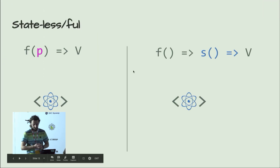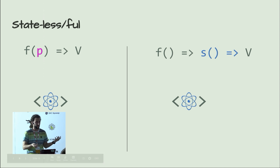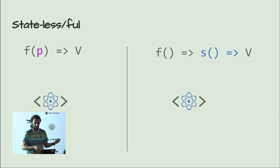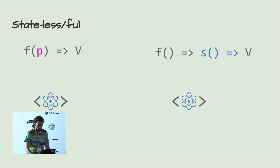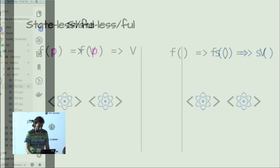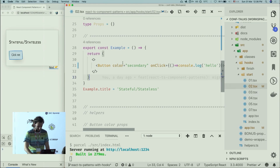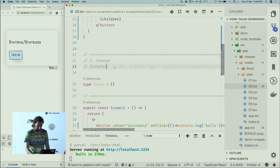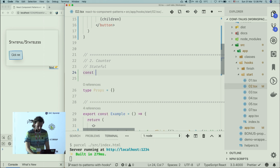The second pattern is the stateful component. A stateful component is just a function that manages some internal state. We handle internal state in React via hooks — it used to be classes, but now we use hooks. Classes are kind of dead in React. Let's implement a stateful component — we'll do a counter, because everyone loves counters.